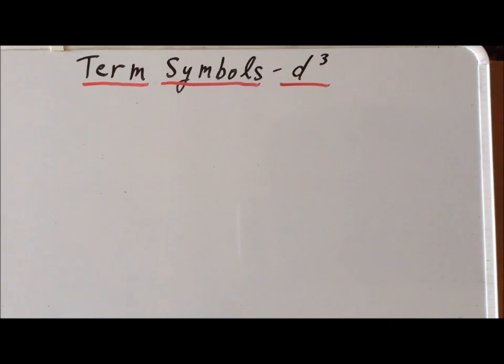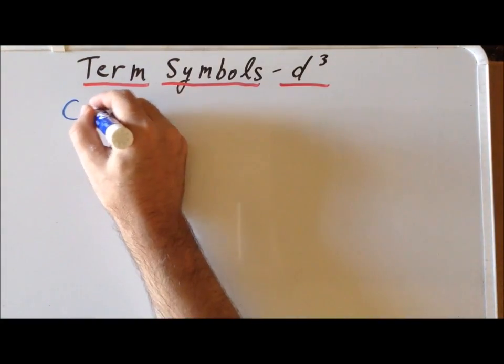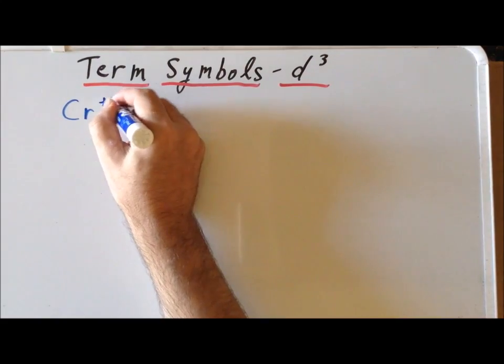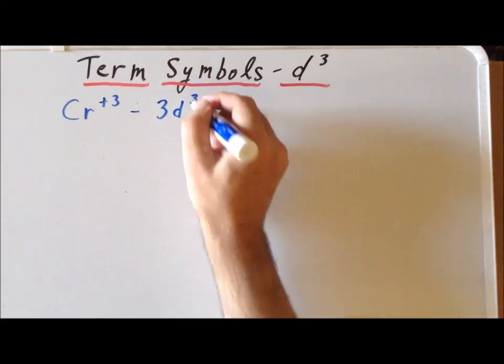Hello. In this video, we are going to derive the spectroscopic term symbols for the d3 configuration. This is where we have three electrons in the same set of d orbitals, as for example, the 3d orbitals. An important example of an ion that has this particular configuration is chromium plus 3. As we recall, in its valence shell, it has a 3d3 configuration.